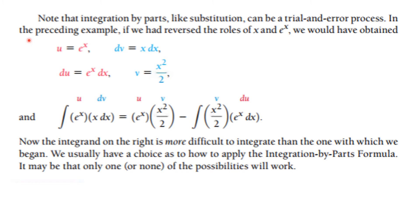That probably seemed complicated. Integration by Parts, like substitution, can be a trial and error process. In the preceding example, if we reverse the roles, you would see that things just get worse instead of better — so that would not have worked. You do have to be careful, as you're basically doing a double substitution and then some additional work.